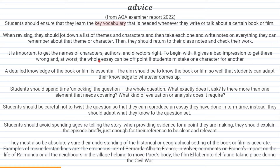It's important to get the names of characters, authors, and directors right. To begin with, it gives a bad impression to get these wrong, and at worst the whole essay can be off point if students mistake one character for another. This is especially important for La Casa with the five different daughters — they do have similar names, so make sure you know each one is a different character. Detailed knowledge of the book or film is essential. Students should also spend time unlocking the question — what exactly does it ask? Is there more than one element that needs covering? What kind of evaluation or analysis does it require?